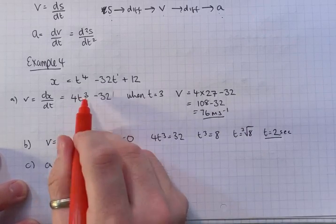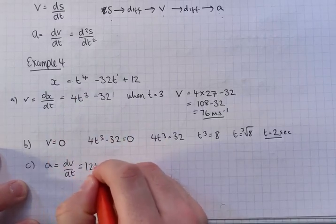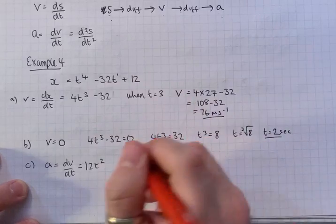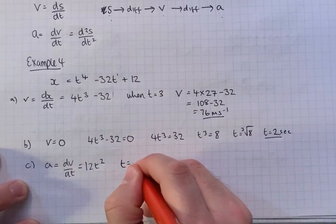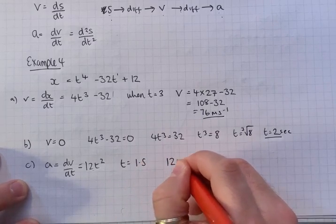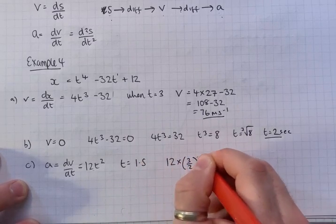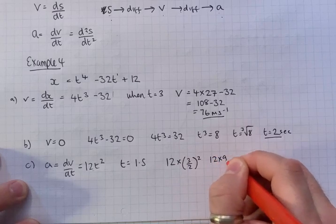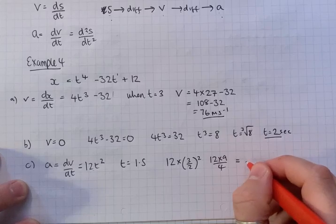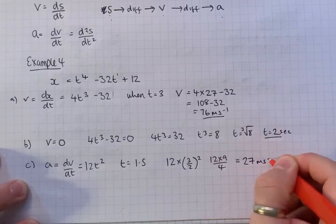So we need to differentiate this. Times by the power: 12, reduce the power by 1: t². We differentiate 32, it goes to 0. So it's just 12t². So when t equals 1.5, we've got 12 times 3 over 2 squared, which is 12 times 9 over 4. 12 divided by 4 is 3 times 9 is 27 meters per second per second.